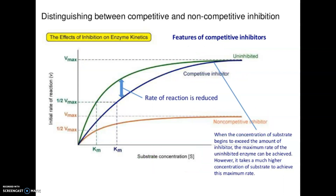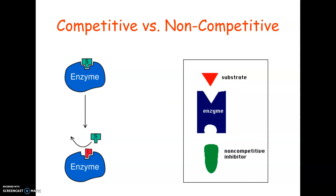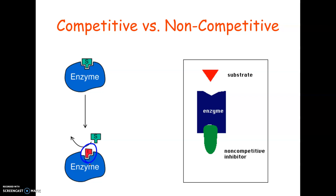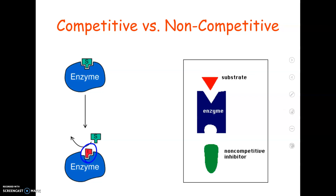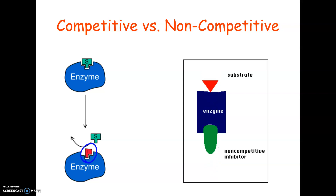Those enzymes are shut down. This diagram shows it nicely: with competitive inhibition, the substrate and inhibitor both fight for the active site, slowing the enzyme down every time it binds to the wrong thing. With non-competitive inhibition on the right side, the inhibitor changes the shape of the active site, so every enzyme that binds to one of these is basically out of the workforce, and our maximum rate is slowed down.